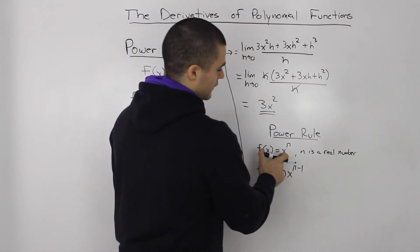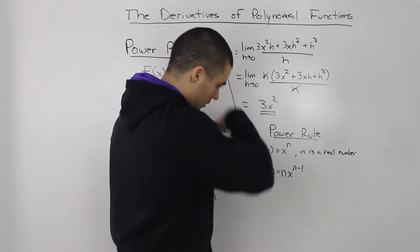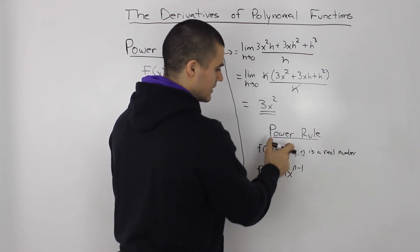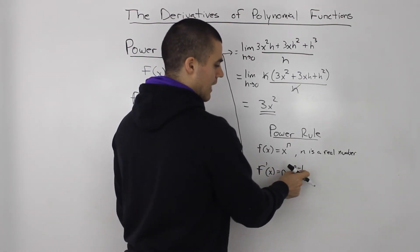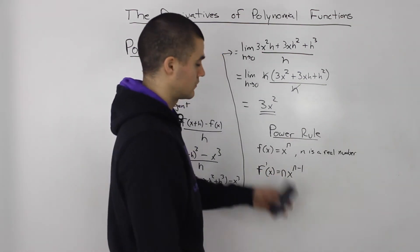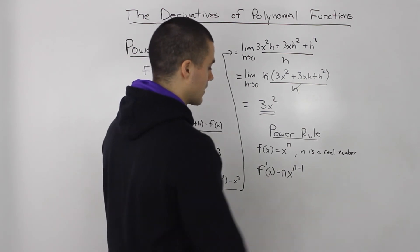So the function will be x to the power of some kind of exponent, right? And the derivative of that is you just bring the exponent down, put it in front of the x, and then you just take away 1 from the exponent, and you get the derivative.